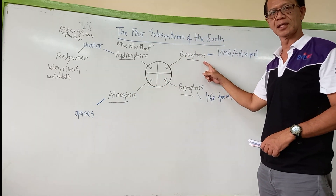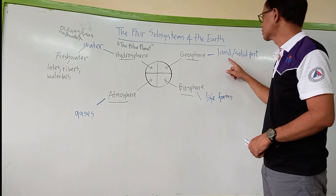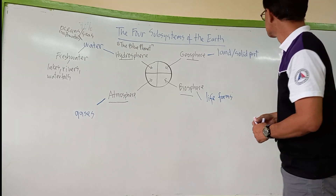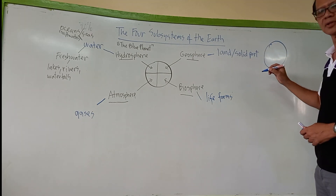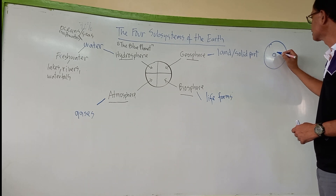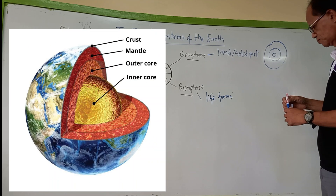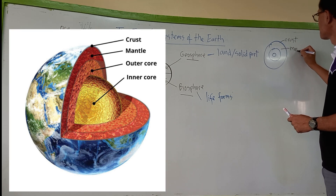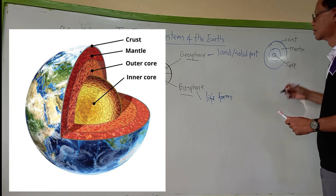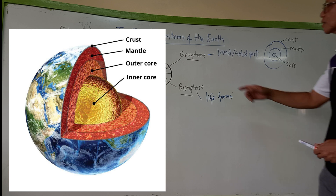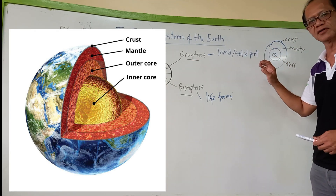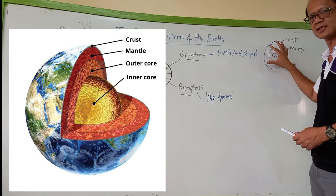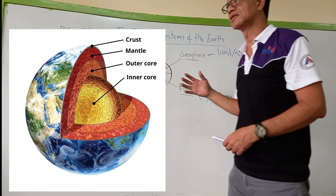Then we go to the geosphere. When we say geosphere, we refer to the solid part of the earth. We can also say this refers to the layers of the earth — we have the core, the crust, and the mantle. So the geosphere refers to the solid part of the earth, including the crust, mantle, and core. This has been discussed many times during grade school science.